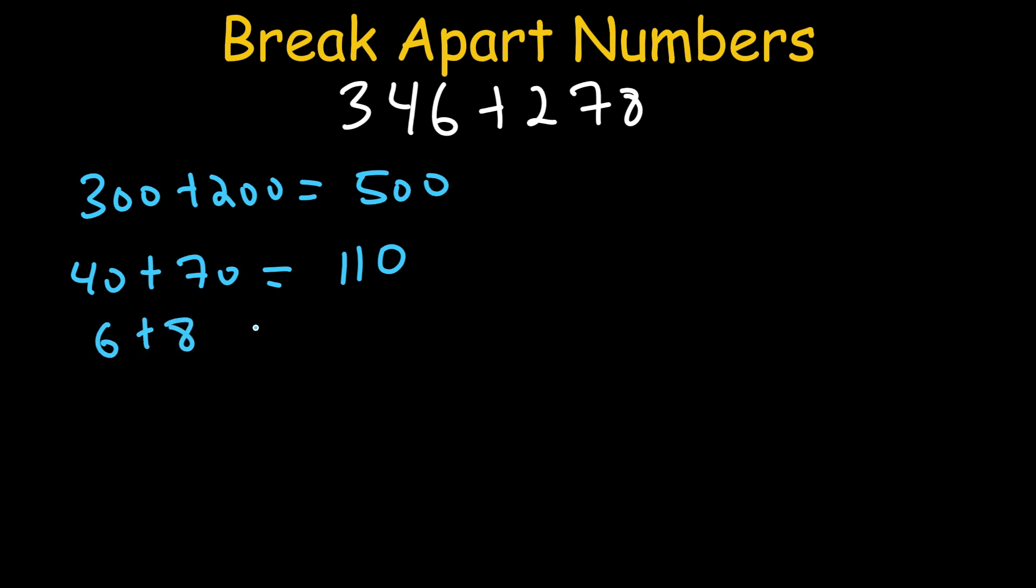The next technique I call Break Apart Numbers. This one is great for both addition and subtraction. Let's say you want to add 346 plus 278. Break it down: 300 plus 200 equals 500, 40 plus 70 equals 110, 6 plus 8 equals 14. Now just add by parts: 500 plus 110 equals 610, 610 plus 14 equals 624. It's clean, organized, and your brain can track it better.